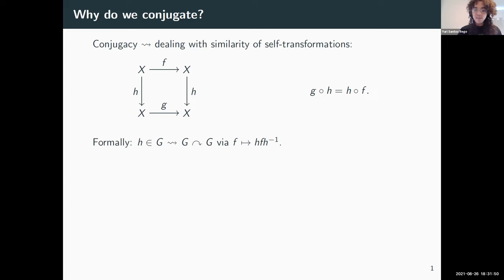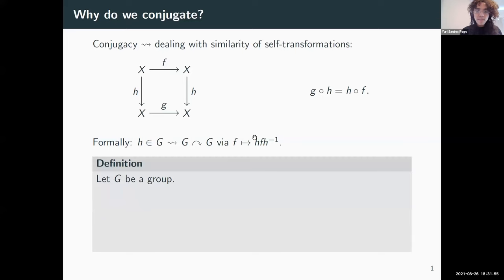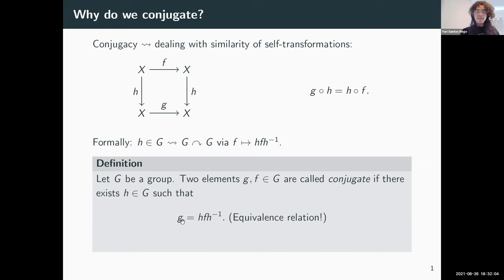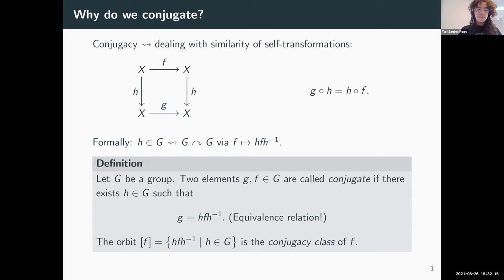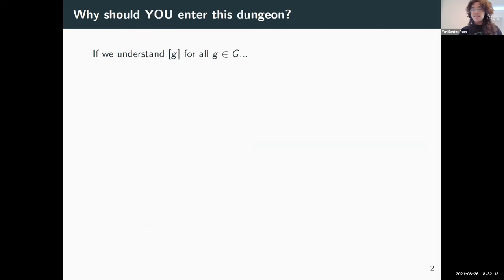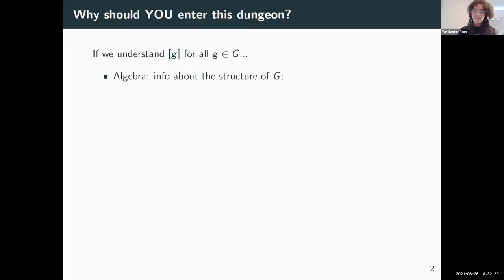Formally, we are formalizing this concept using group theory. We look at groups acting on themselves with this relation. Elements are called conjugates in a group if, for G and F, you can find a third element H that satisfies this relation, which is also an equivalence relation. The orbits under this action are called the conjugacy classes.